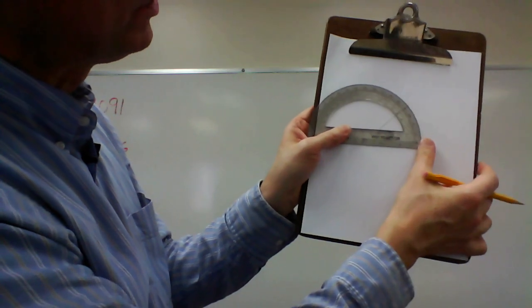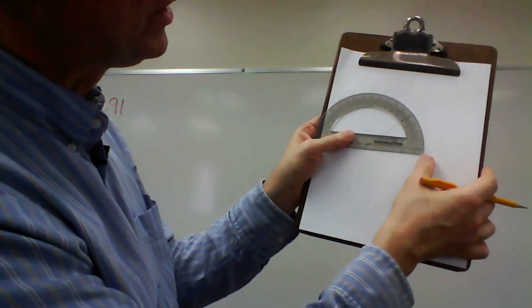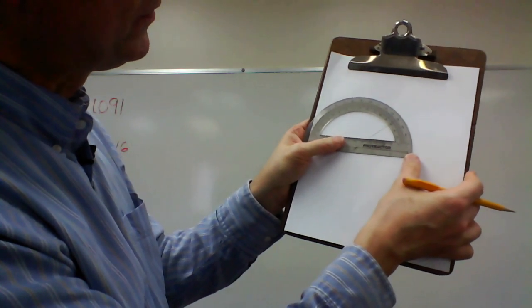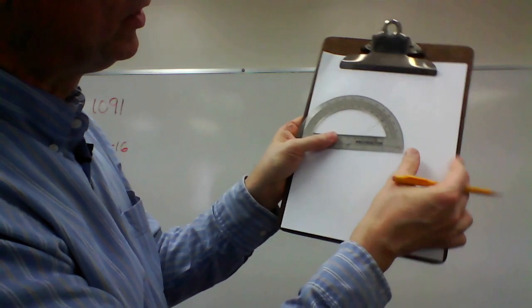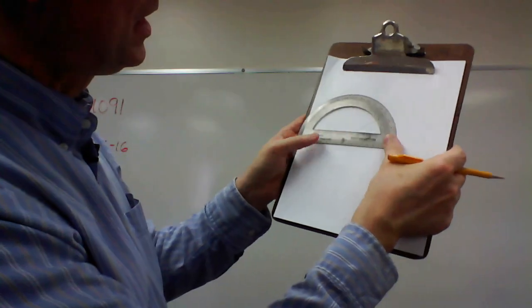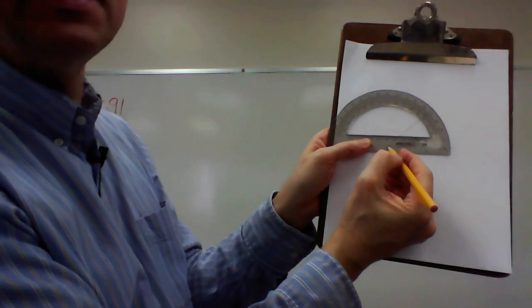Line it up with the zero mark, with the pencil line that I just drew, and then make sure that the vertex, the very tip of the angle, is inside the dot.